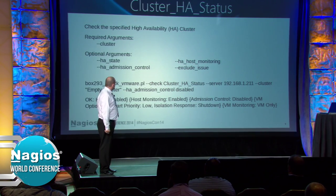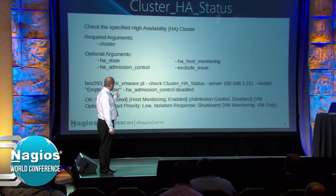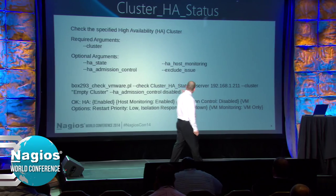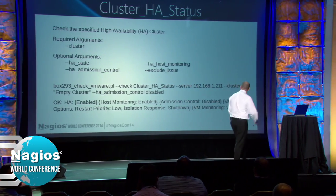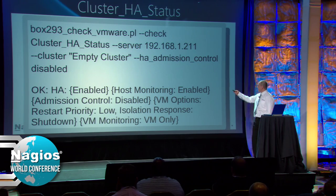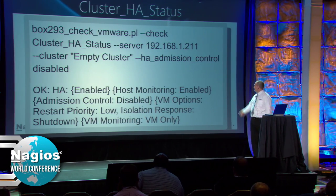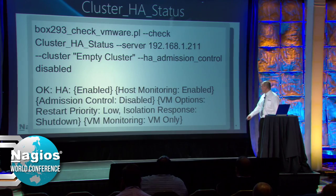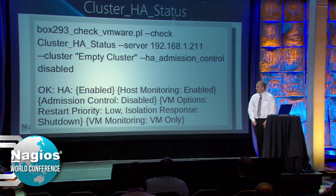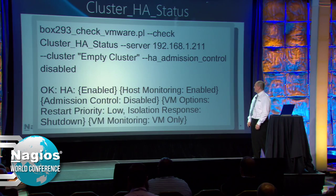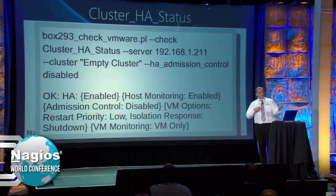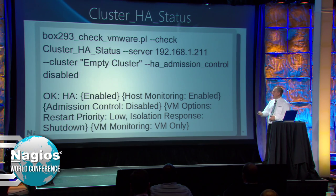Cluster high availability status - similar to the DRS, it has the different modes and different things you can check. This one is okay and just reporting what everything is set at. Admission control is disabled - these are just all the options displayed. This gets back to my auditing - to see that the way you set it up is remaining the way it's set up.